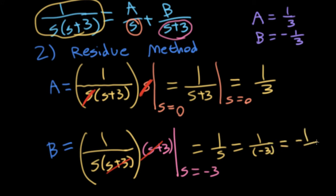Well, let's just write that as minus one over three. So the A and B here that I found with the residue method match the A and B I found with the fraction clearing method.